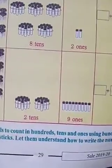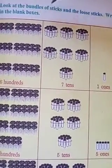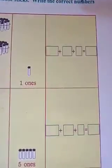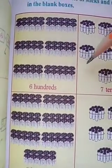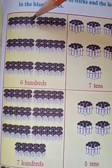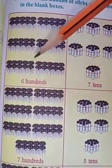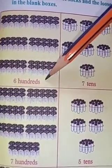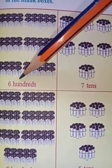Page number twenty-nine, open it children. Look at the bundles of sticks and the loose sticks. Write the correct numbers in the blank boxes. See here, this one group means hundreds. I am saying children, hundred. How many hundreds are there here? One, two, three, four, five, six — six hundreds. Hundred spelling: H-U-N-D-R-E-D. Six hundreds.